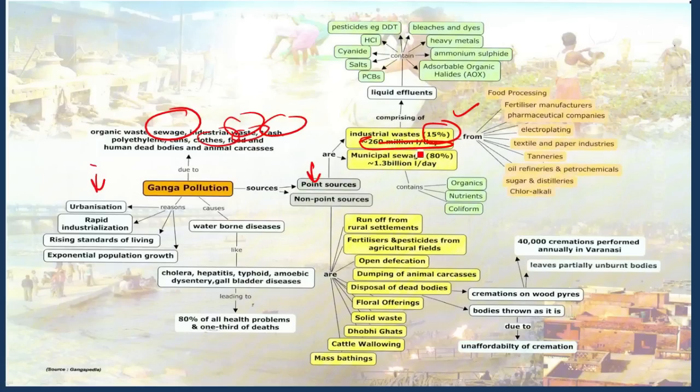Municipal sewage waste accounts for 80% of the point sources. The onus is directly on the government of these states since they add municipal sewage waste instead of treating the waste in the sewage treatment plants. We are adding totally from the 11 states 1.3 billion liters of sewage into the Ganga River directly.